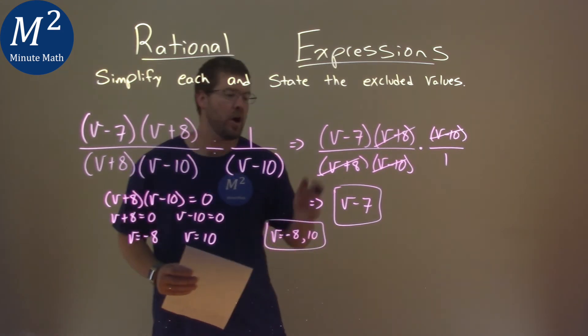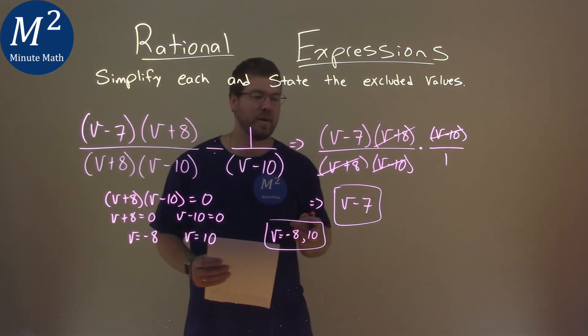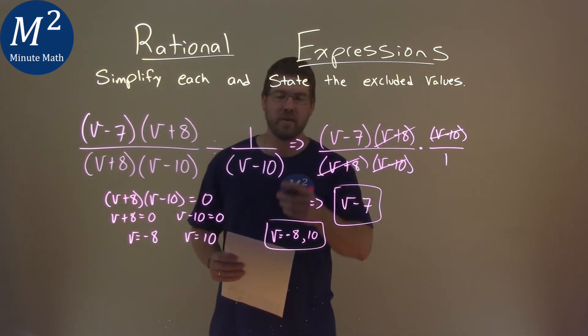And again, our simplified expression is just v minus 7, and that is our final answer.